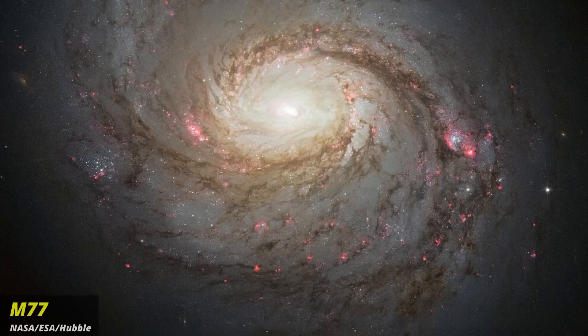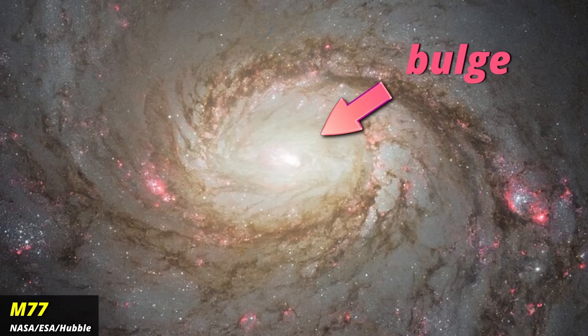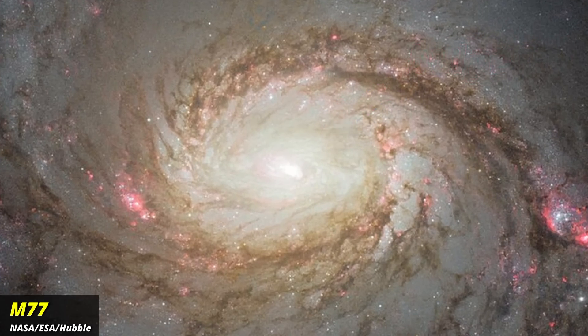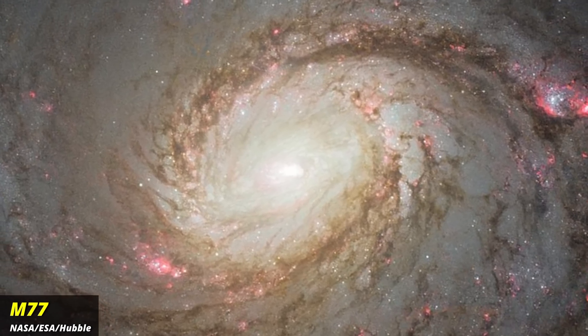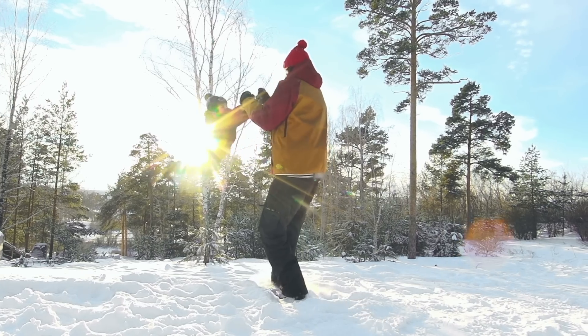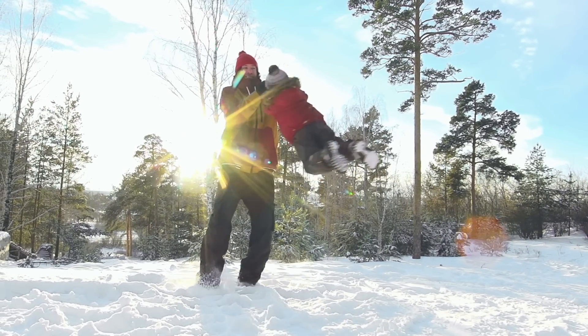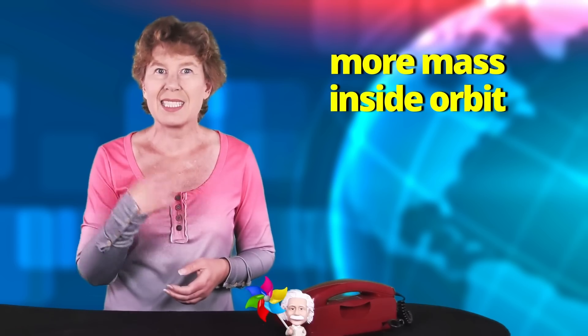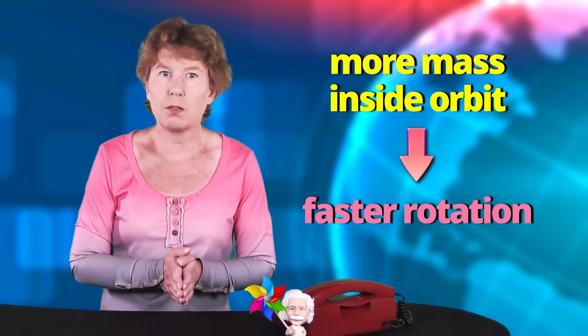Galaxies usually have most of their stars in the center. It's called the bulge of the galaxy. The biggest part of the visible mass is there. From this you can calculate how fast the stars further out should go around the center of the galaxy. Loosely speaking, the centripetal force that comes from the rotation needs to balance the gravitational pull. So the more mass inside the orbit, the faster the stars need to go around.